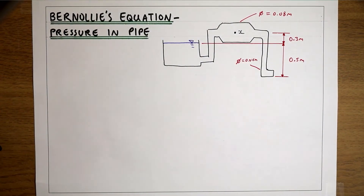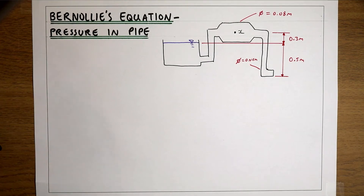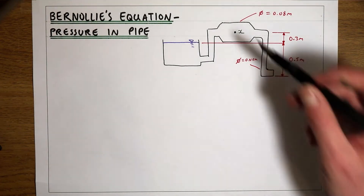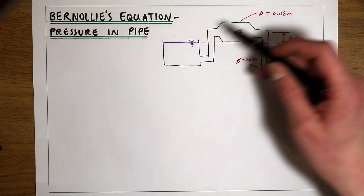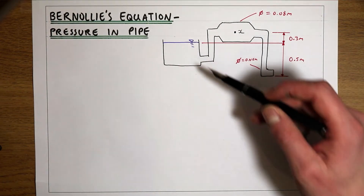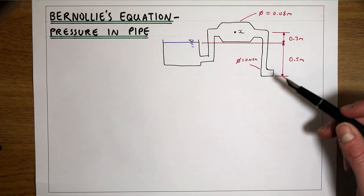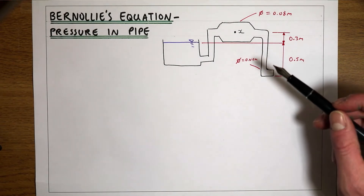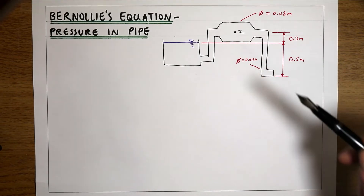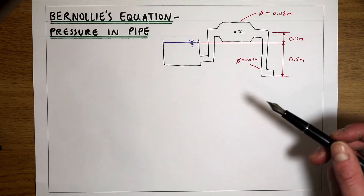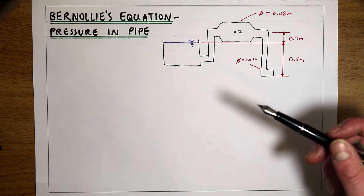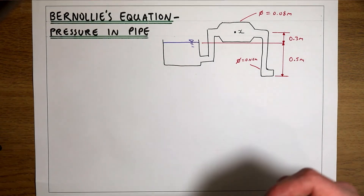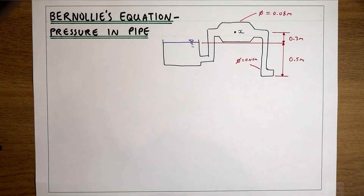In this video we're going to use Bernoulli's equation to solve a problem that's been set up here. This problem is slightly more complicated than the previous two videos, and it actually combines the principles that we've looked at in those previous videos.